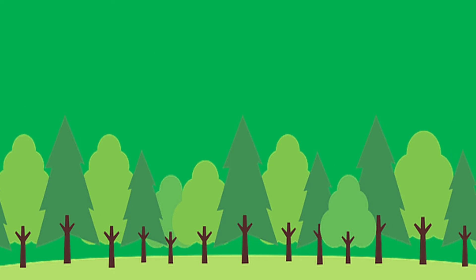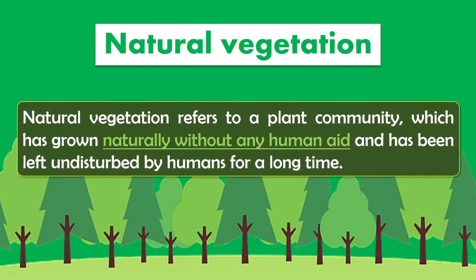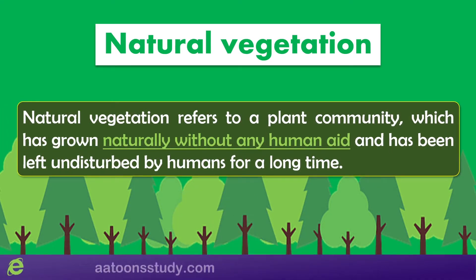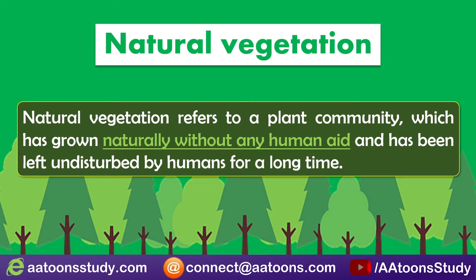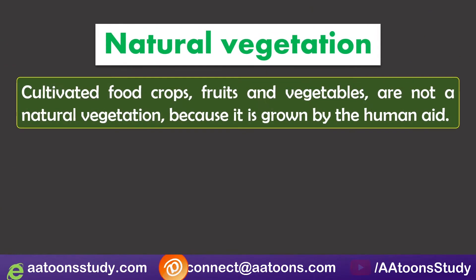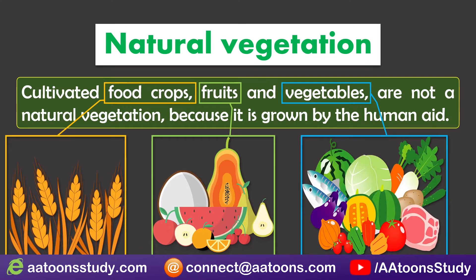Hello all. In this video we will discuss about natural vegetation — simply, vegetation means forest. Natural vegetation refers to a plant community which has grown naturally without any human aid and has been left undisturbed by humans for a long time. Cultivated food crops, fruits, and vegetables are not natural vegetation because they are grown with human aid.